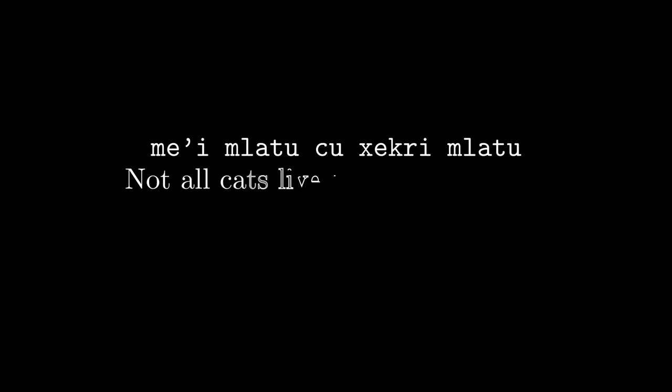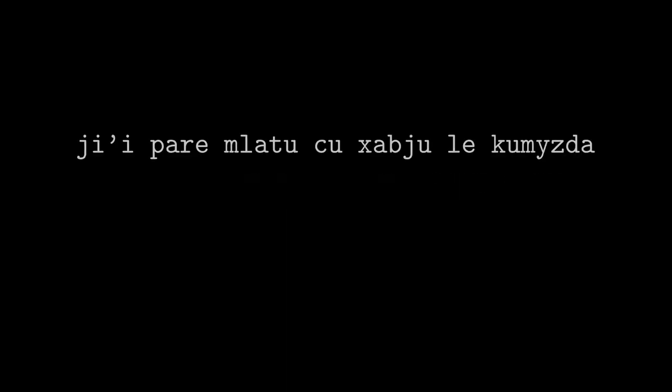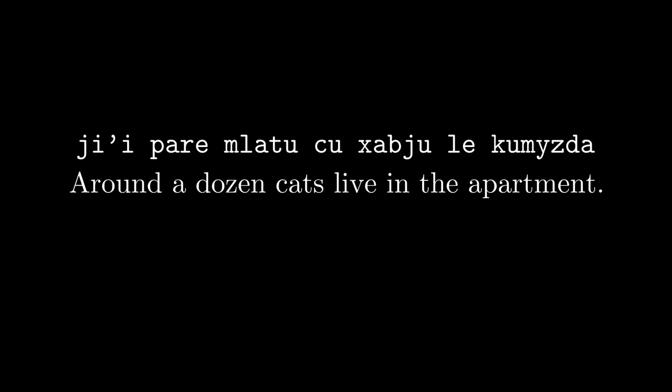'Su'e' means at most, and without a quantifier it means at most one. 'Za'u' means more than, and without a quantifier it means more than one. 'Me'i' means less than, but without a quantifier it means less than all, or not all — so 'me'i mlatu cu xekri mlatu' means not all cats are black cats. 'Da'a' means all except one. 'Ji'i' means approximately, and you do need to follow it with a quantifier — so 'ji'i pare mlatu cu xabju le kumizda' means around a dozen cats live in the apartment.